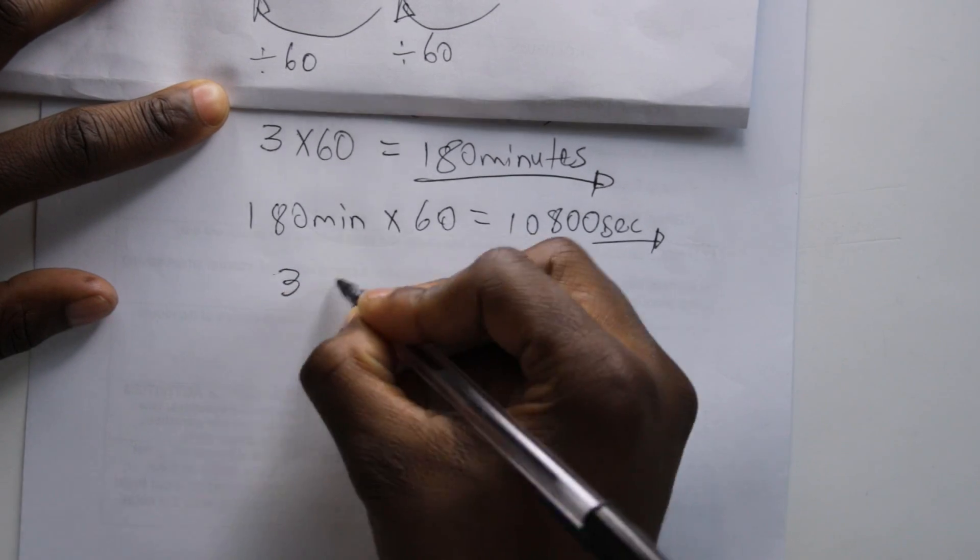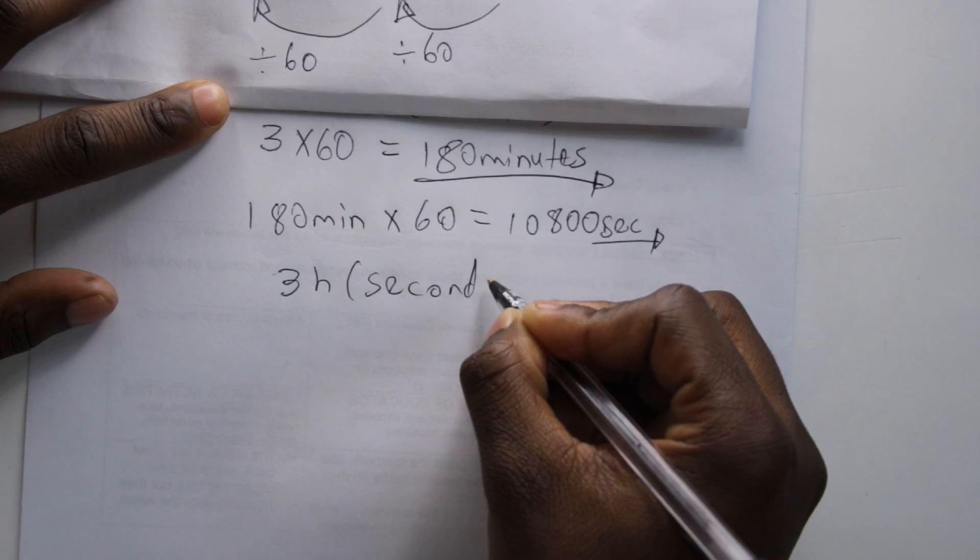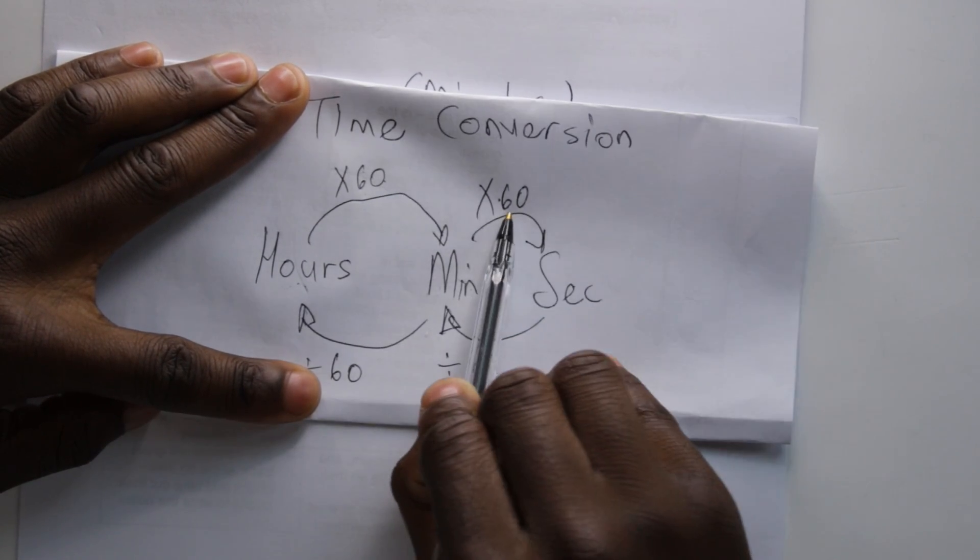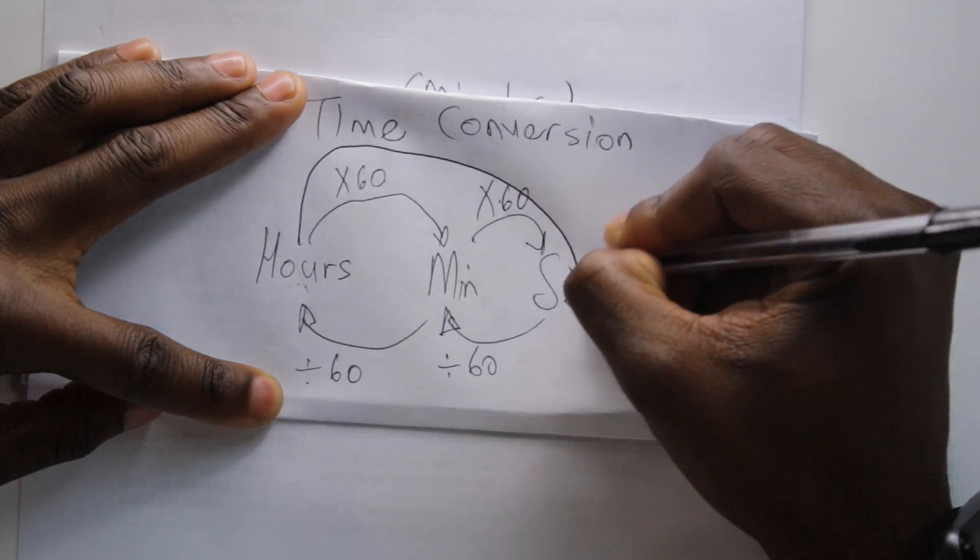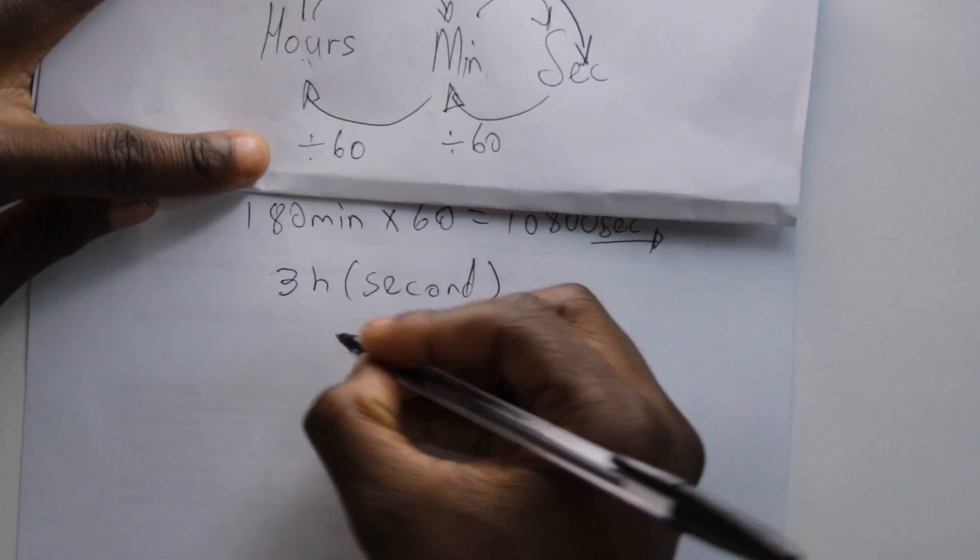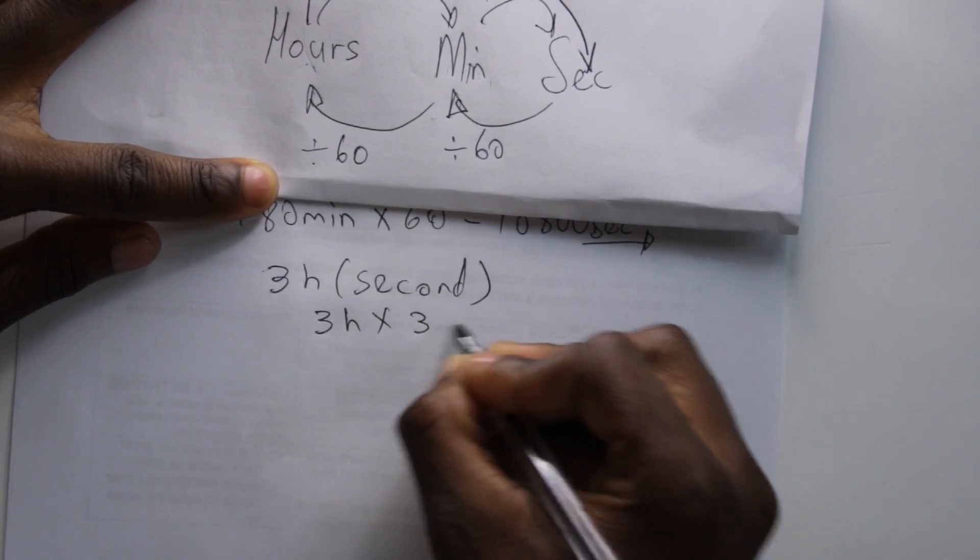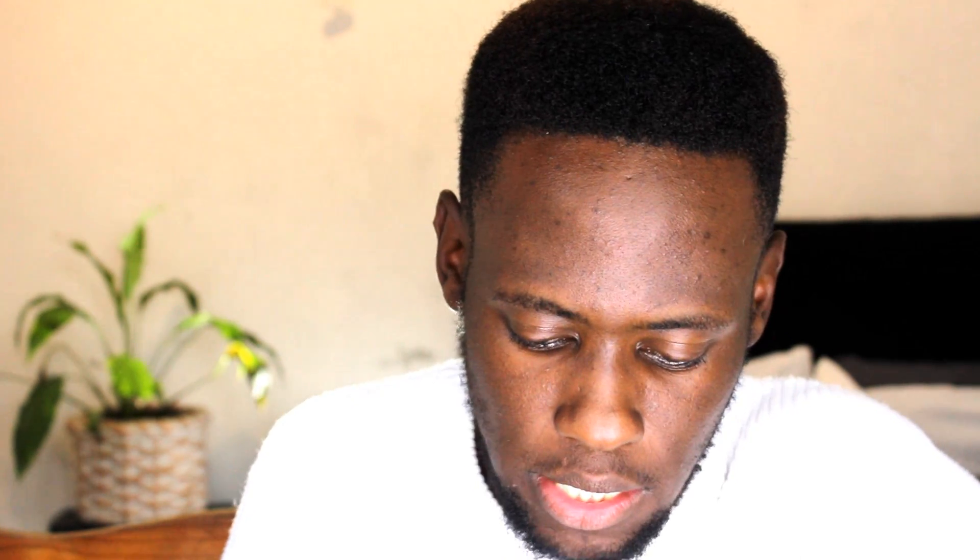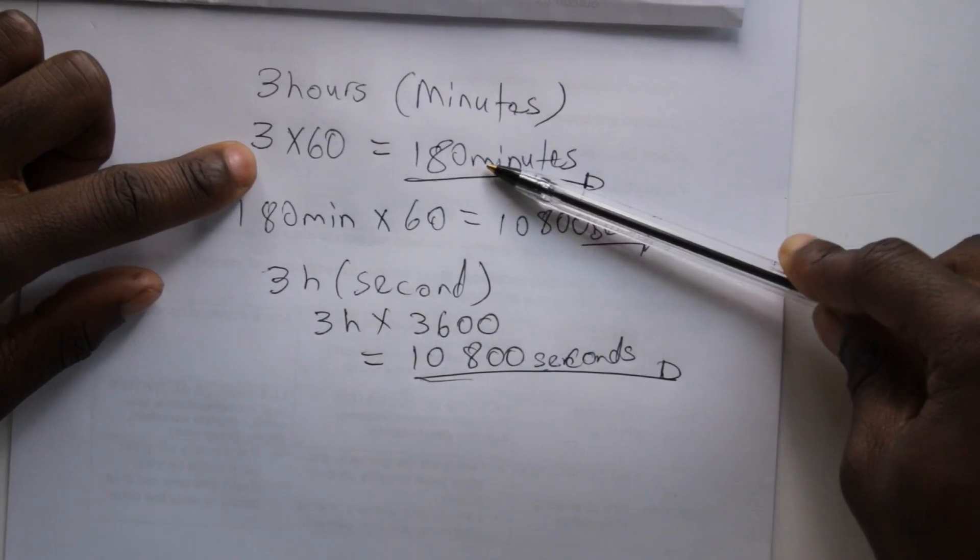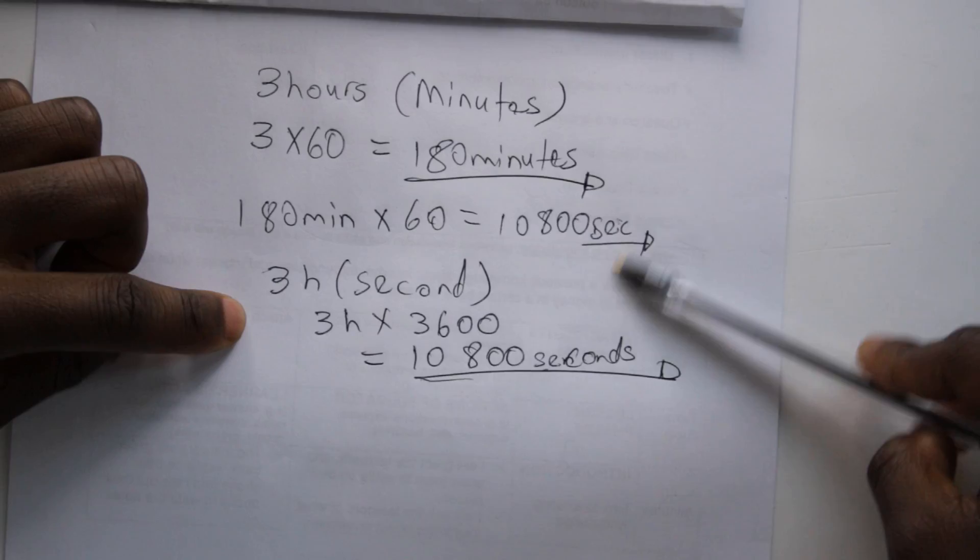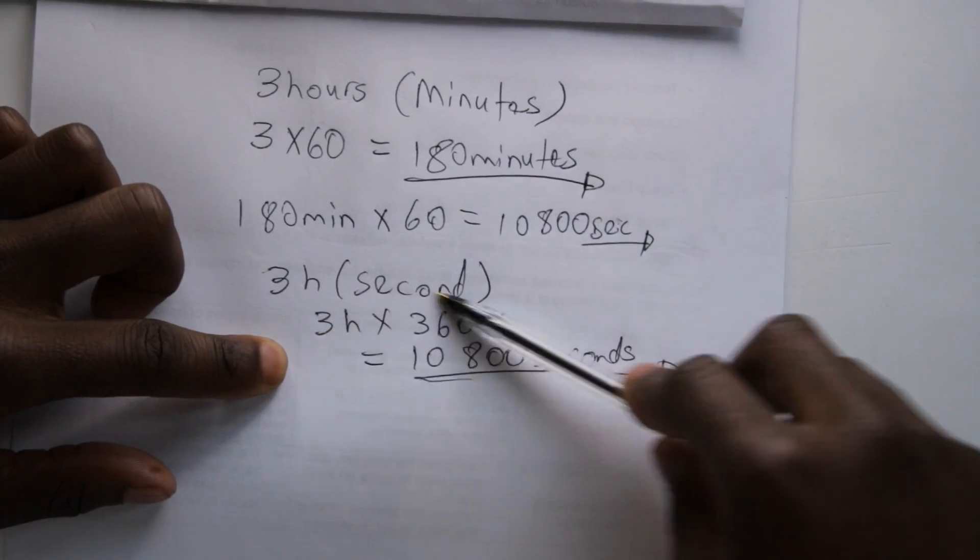Now converting three hours straight to seconds, we might do this in two methods. We can have 3 times 60 times 60, or else you can go straight by on a calculator 60 times 60, it will give you 3,600, then you can say 3 hours times 3,600. It gives us 10,800 seconds.